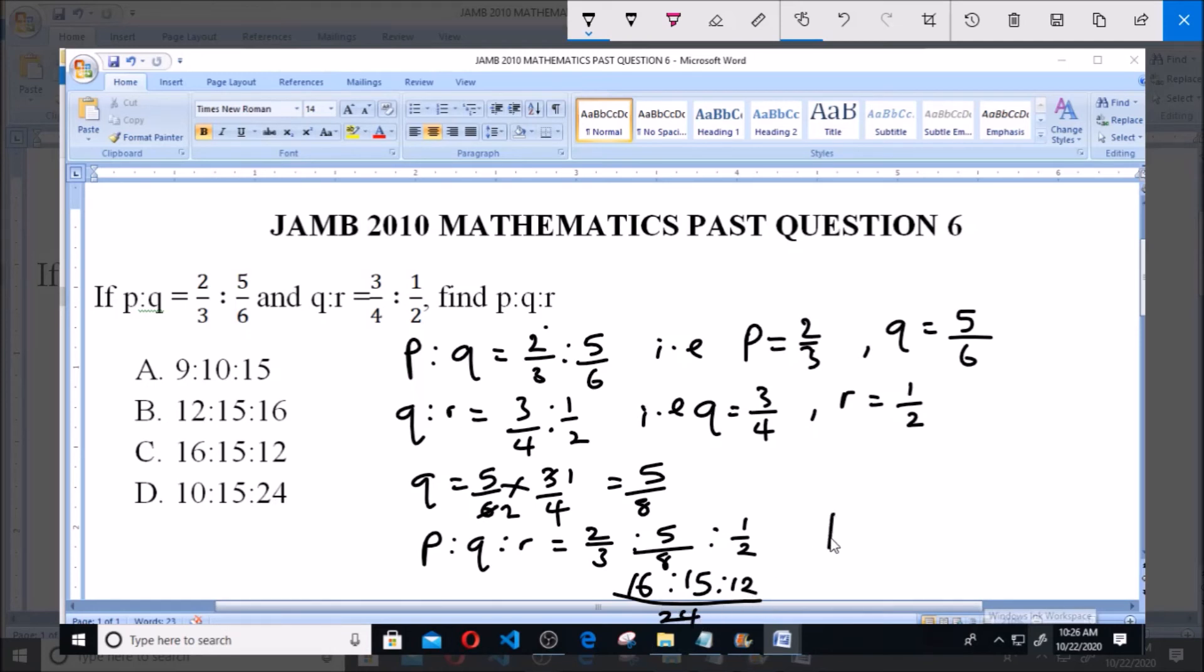Since the denominators are now the same for all, we can say p ratio q ratio r equals 16:15:12. Looking at this, that is option C. So option C is the correct answer to this question, 16:15:12.